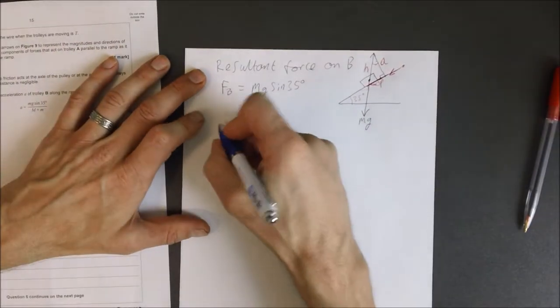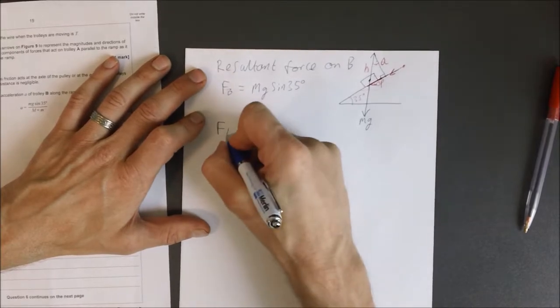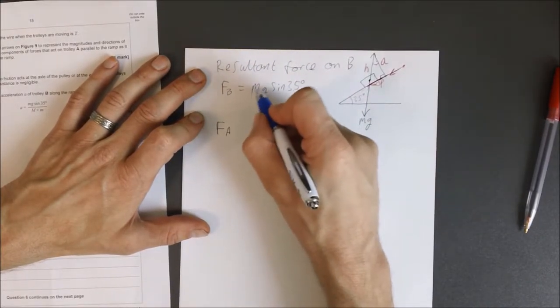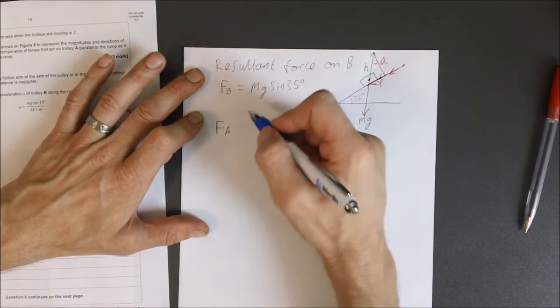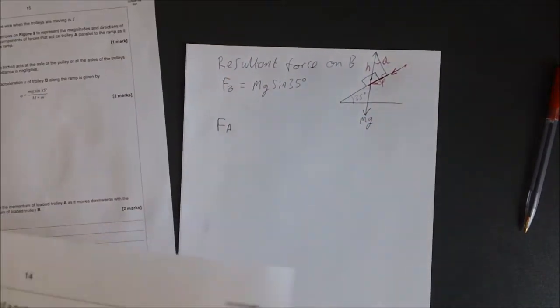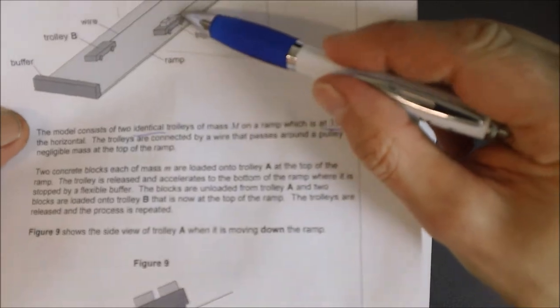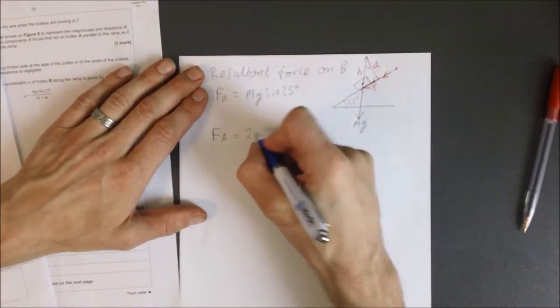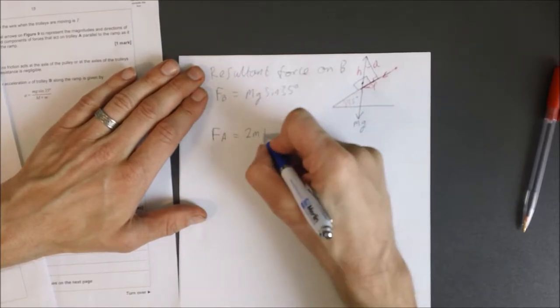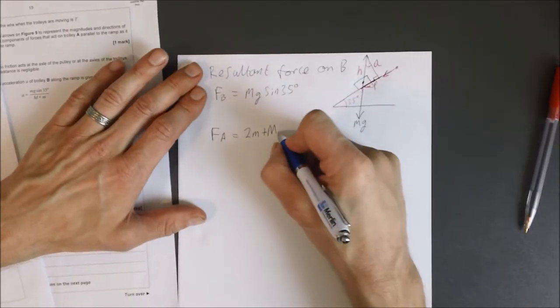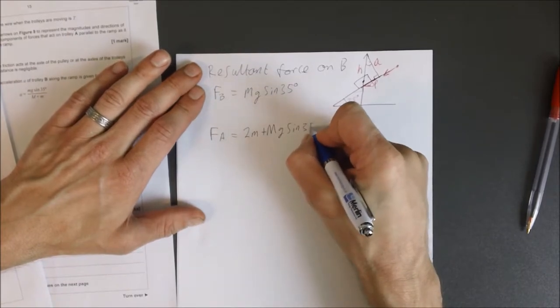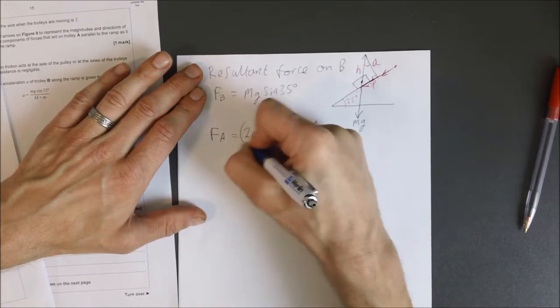Now if we look at A, the force due to A then must be this M here, the big M, plus 2M. Because if you look back at the diagram here, you've got the two blocks on there. So that equals 2 little m plus big M, G, sine 35 degrees. Let's just put those in brackets.